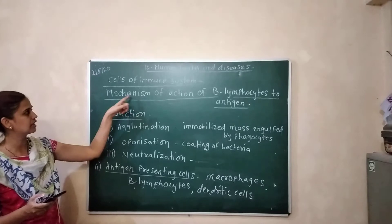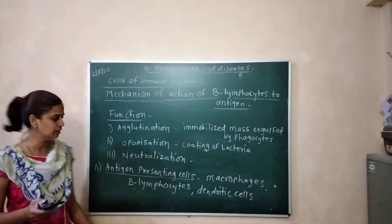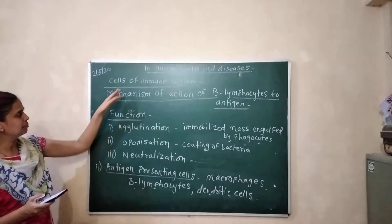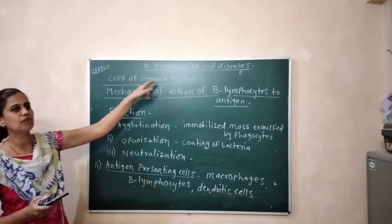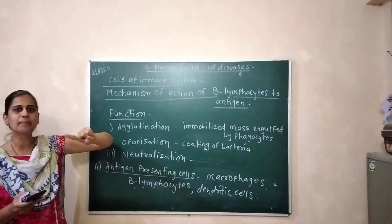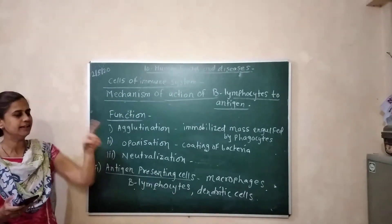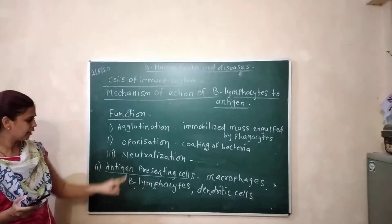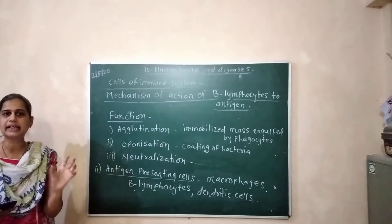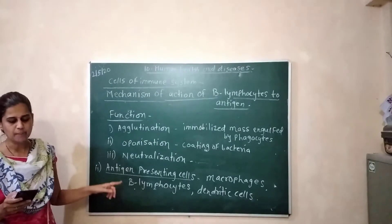These three functions are performed by B lymphocytes in the immune system. In the cells of the immune system, there are two types of lymphocytes: B lymphocytes and T lymphocytes. There are also antigen-presenting cells in our body.